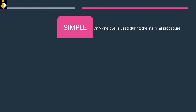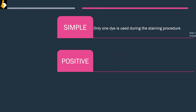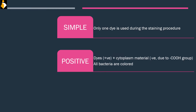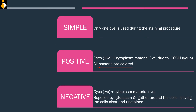Now we will see the difference between positive and negative staining. In positive staining, the dye is positive and the cytoplasm material is negative in nature, so they bind — as shown in the previous slide. The reason cytoplasm material is negative is due to the carboxyl group which is present. In positive staining, all bacteria are colored — this is the main difference. In negative staining, the dye is also negative, but the cytoplasm material is still negative. Since same charges repel each other, the dye is repelled by the cytoplasm.